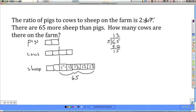And the question asks me, how many cows are there on the farm? Well, if each one of these units is 13, 4 of those units is cows. So I want to do 4 times 13. That I know from a deck of cards is 52. So there are 52 cows.